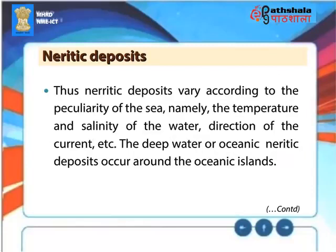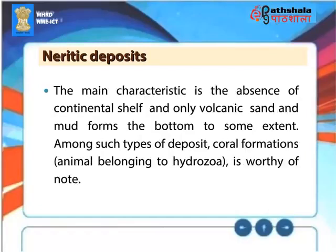Neritic deposits vary according to the local peculiarities of the sea, namely the temperature and salinity of the water, direction of the current, etc. The deep water or oceanic neritic deposits occur around the oceanic islands. The main characteristic is the absence of a continental shelf, and only volcanic sand and mud form the bottom to some extent. Among such types of deposit, coral formation belonging to hydrozoa is worthy of note.